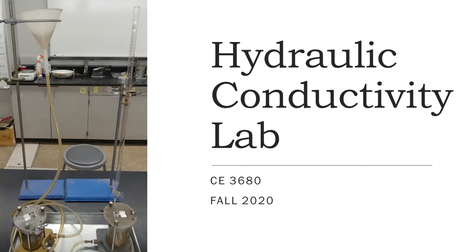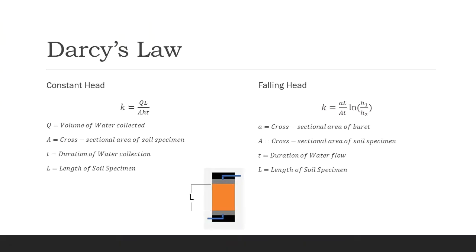In this video, we will be discussing the hydraulic conductivity lab. In this lab, we have two methods for testing the hydraulic conductivity of soil: the constant head test and the falling head test. In both methods, we will be using the permeameter filled with soil.